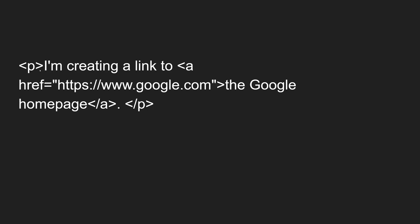Let's see an example. Here we have a paragraph, and I am creating a link using a href equal to https://www.google.com — the Google homepage. This is how we will be creating the hyperlink.